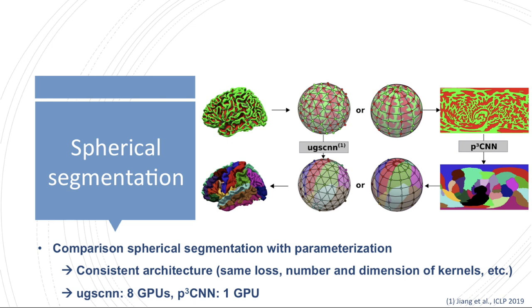Surface-based deep learning approaches such as spherical CNNs are however a rather new field, primarily focusing on classification, and in addition suffer from high computational demands and challenging definitions of the pooling and convolution operations.